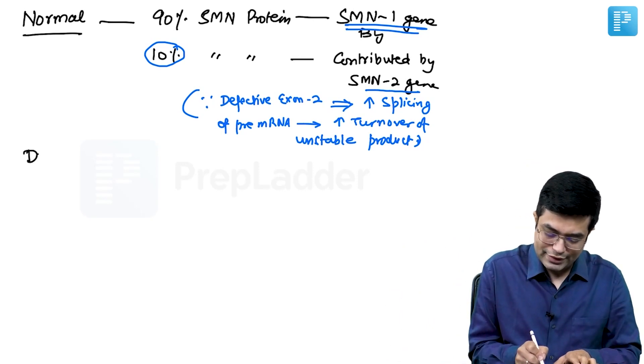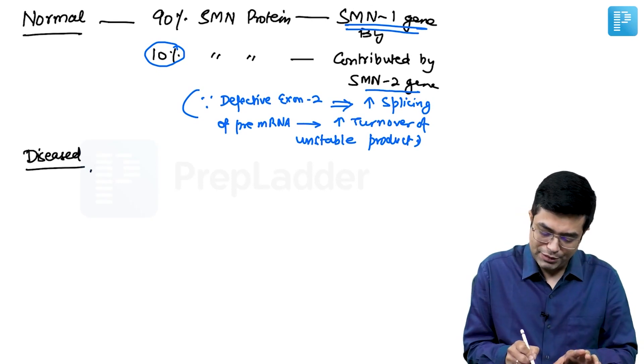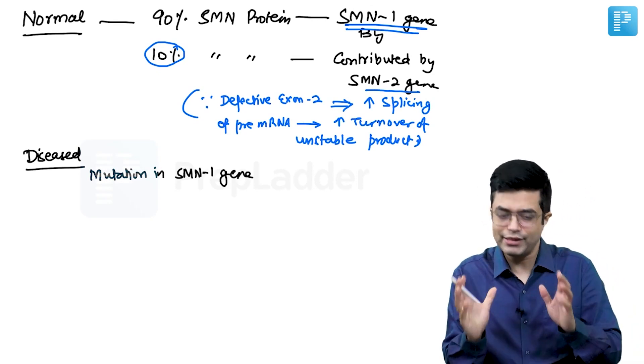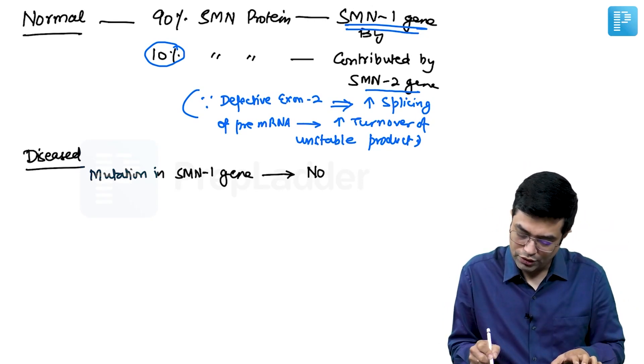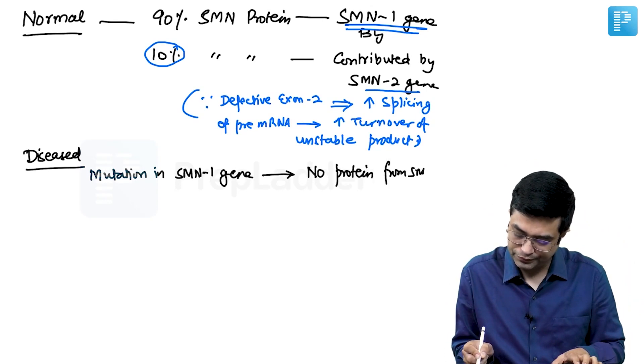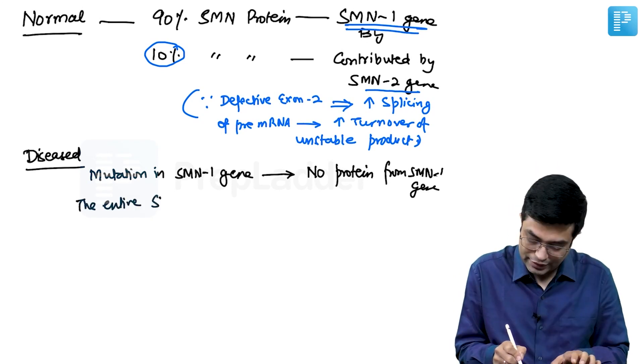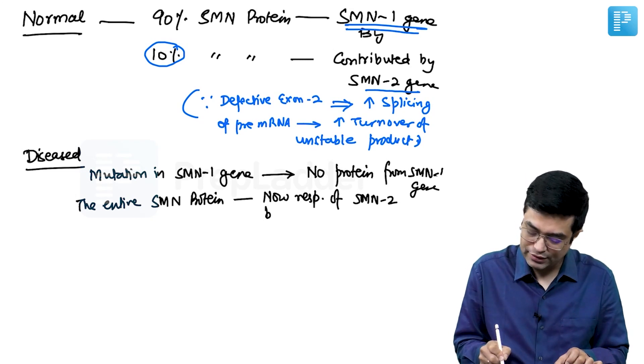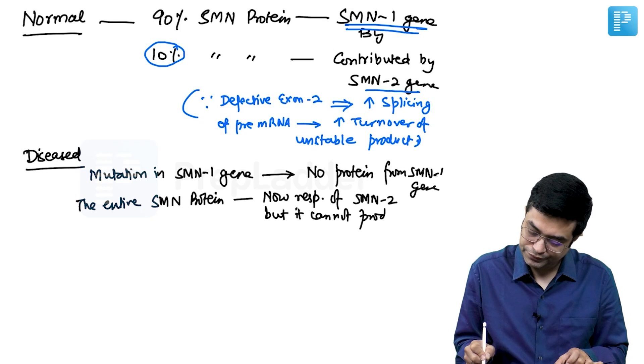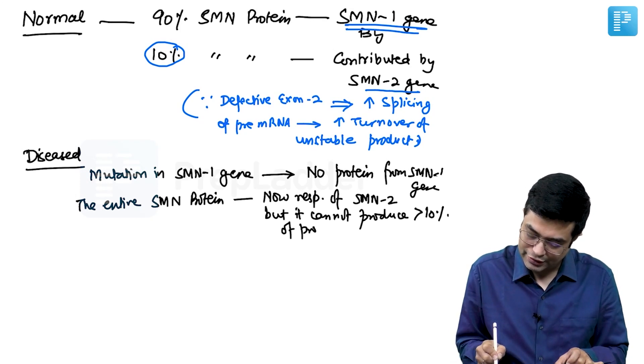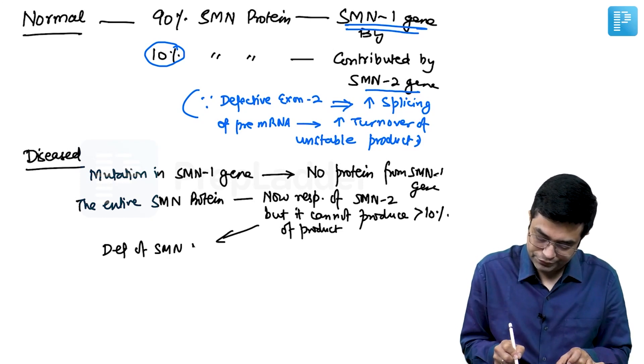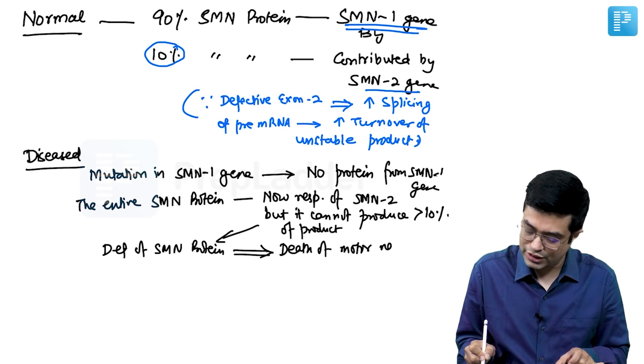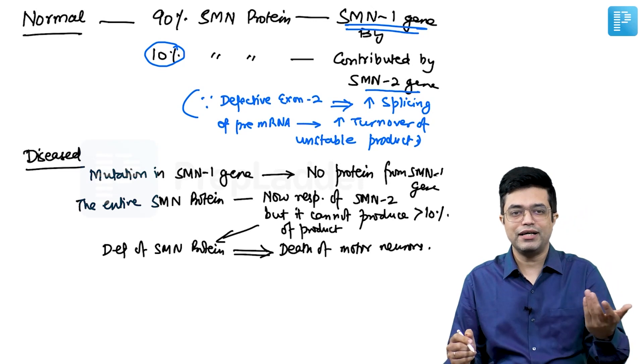Now imagine a scenario in a diseased state. What will happen? In a diseased person, there will be mutation in the SMN1 gene. This is complicated, so I'm trying to go slow and explain in simple words. Mutation will happen in SMN1 gene, so there will be no protein formed from SMN1. What will happen? The entire SMN protein is now the responsibility of SMN2, but it cannot produce more than 10% of the product, which leads to deficiency of SMN protein. This deficiency of SMN protein will lead to develop the death of motor neurons, leading to the disease getting produced. SMN2 is there, but it is not able to compensate for it.